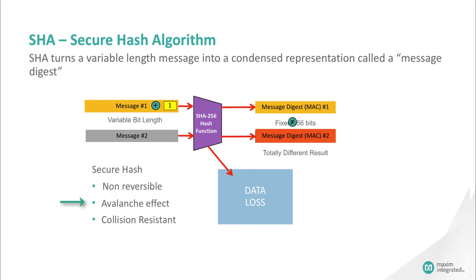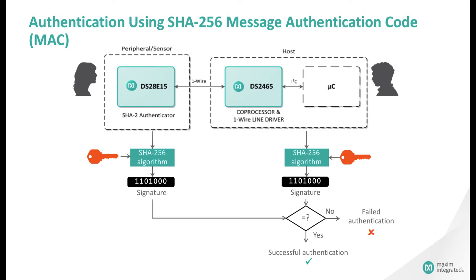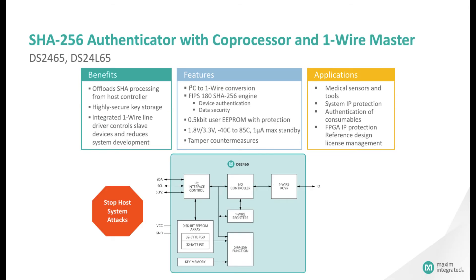Second, the avalanche effect: if one bit is changed in the message, the MAC output changes drastically. This prevents hackers from incrementally feeding in message digests to make a correlation with the MAC. Third, collision resistant: it's mathematically impossible to have two messages with the same MAC and have it make sense. This is a typical application using SHA-256 authentication. This is a SHA-256 authenticator with protected EEPROM, featuring a FIPS-180 SHA-256 engine with one-wire interface, available with different EEPROM sizes. This is the authenticator with coprocessor and one-wire master.